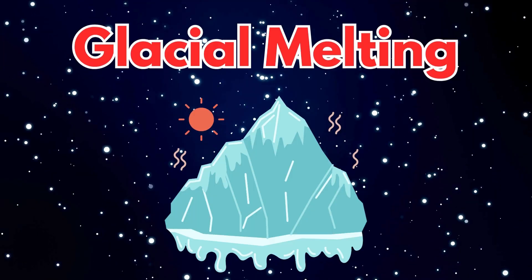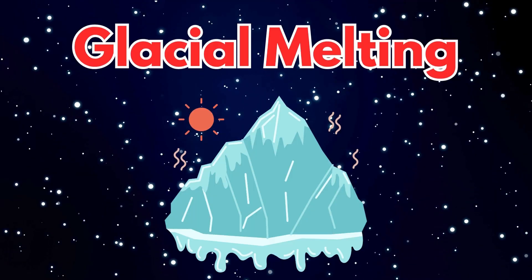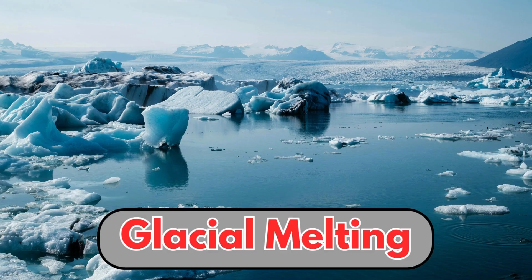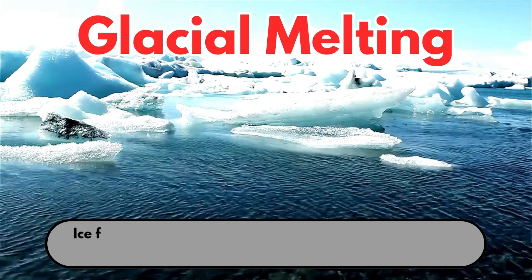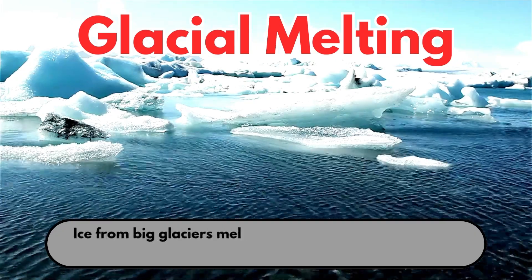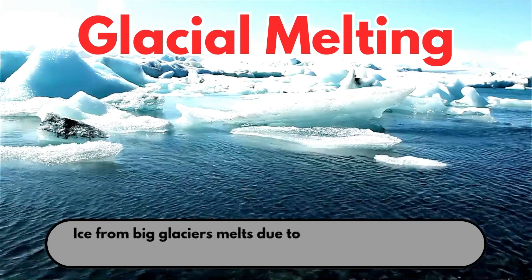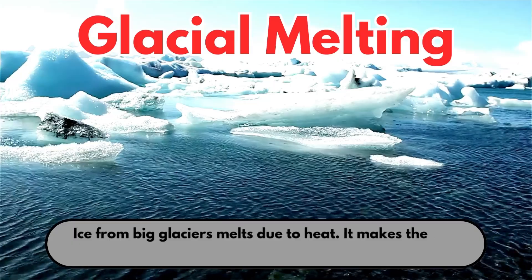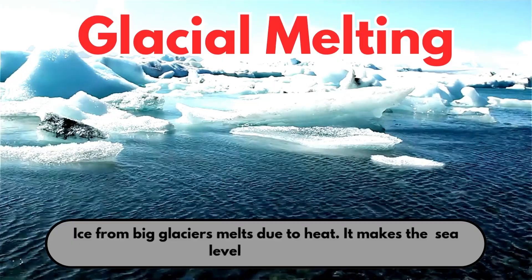Glacial melting. This is glacial melting. Ice from big glaciers melts due to heat. It makes the sea level rise slowly.